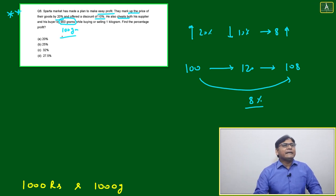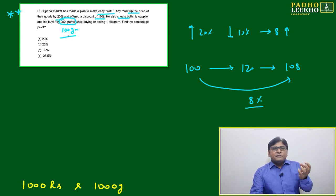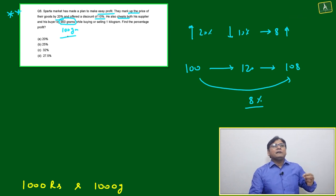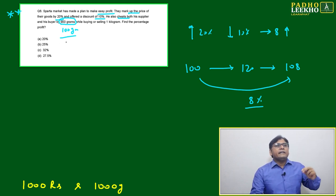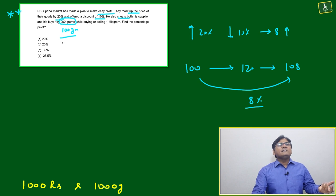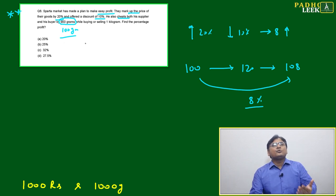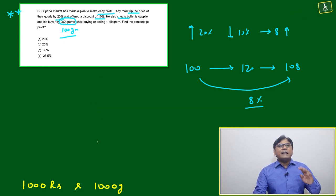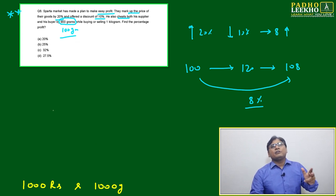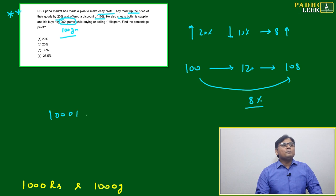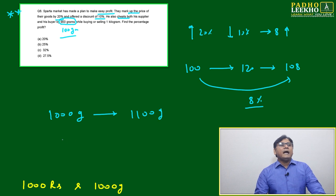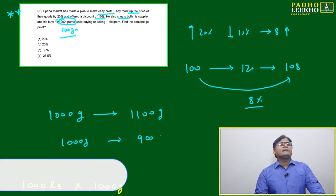It should be 100 grams - there's a typo. He is buying from his supplier and cheating there, and when selling to the customer he's also cheating. Everywhere, in place of 1000 grams, he's making a cheat of 100 grams. When he wants to purchase 1000 grams, he purchases 1100 grams. When he wants to sell 1000 grams, he sells 900 grams.